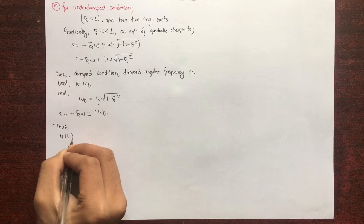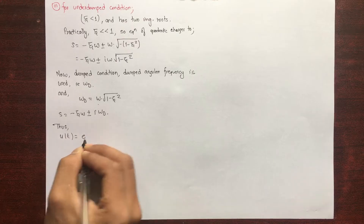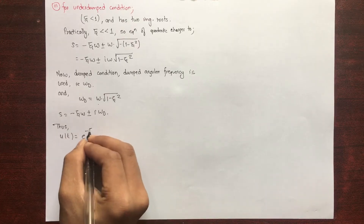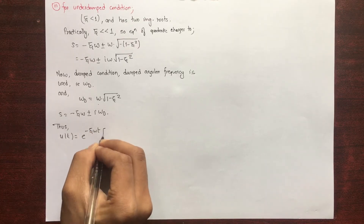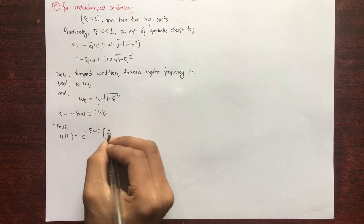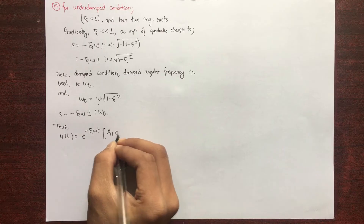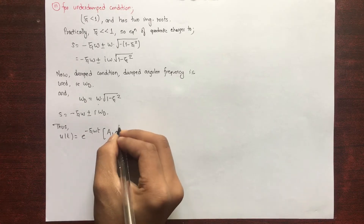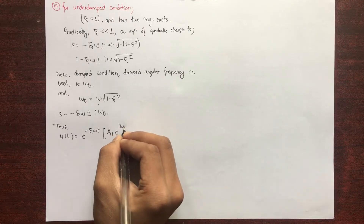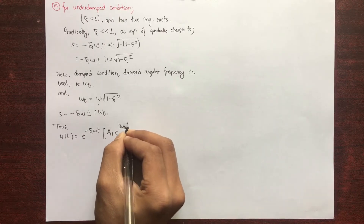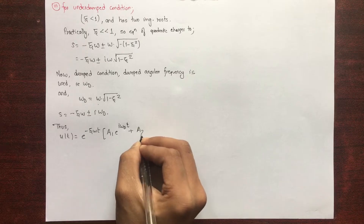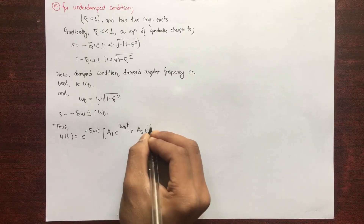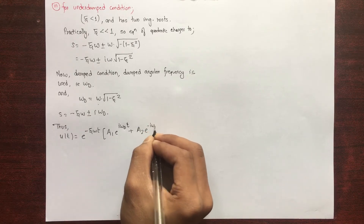Thus, the displacement equation is u(t) = e^(−ξωt) · [A₁·e^(iω_d·t) + A₂·e^(−iω_d·t)].